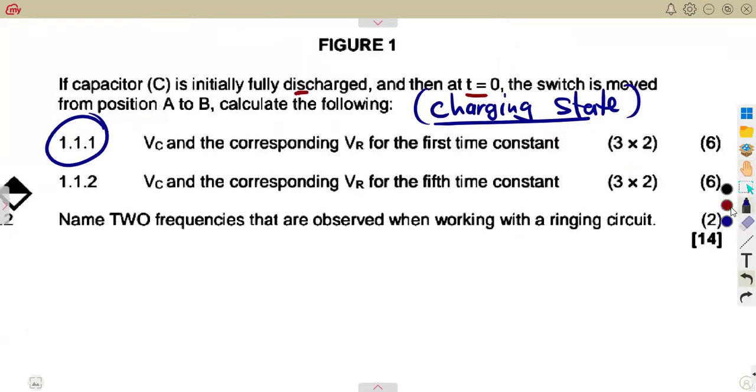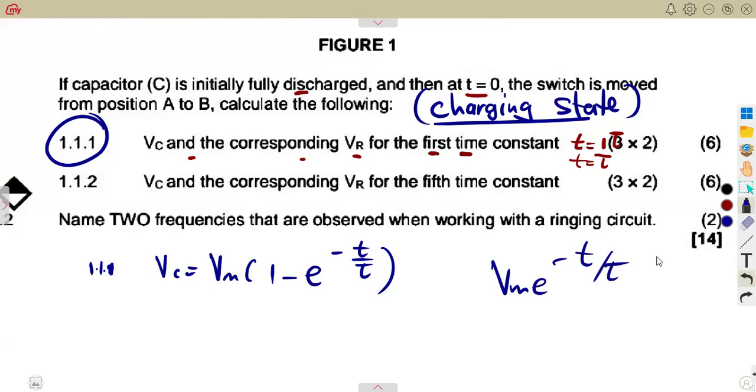Question 1.1.1: they want you to calculate VC and the corresponding VR for the first time constant. For the first time constant, it means time will be equal to one time constant. Time and the time constant will be exactly the same. Let's start with our VC. Remember, this is a capacitor that we are dealing with and it's a charging state. Our VC is taken from VM times 1 minus e to the exponent of minus t over τ. This is the charging state. If it was a discharge, it was just going to be VM e to the exponent of minus t over τ.